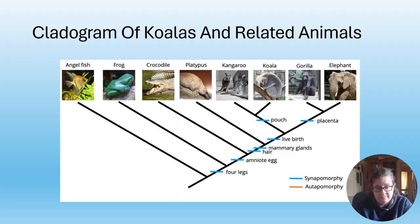This is a cladogram of koalas and related animals. We have forelegs, Diprotodontia - these are koalas. I see pouches. Kangaroos are off there. Placental mammals - that's us.